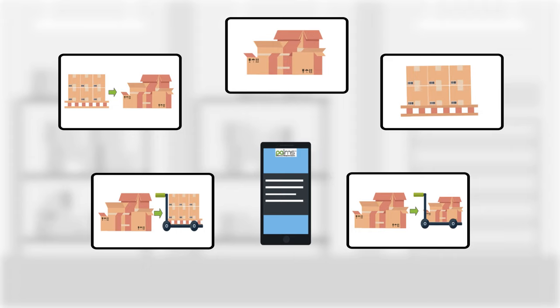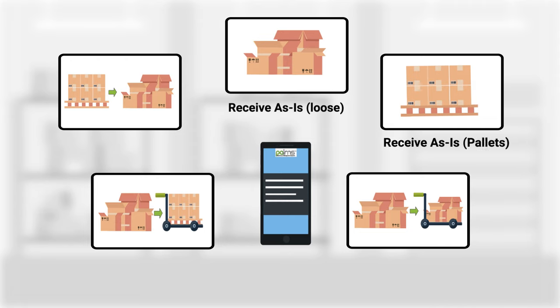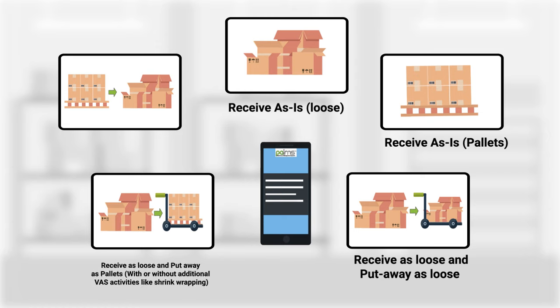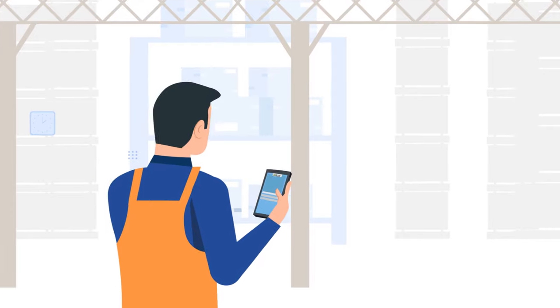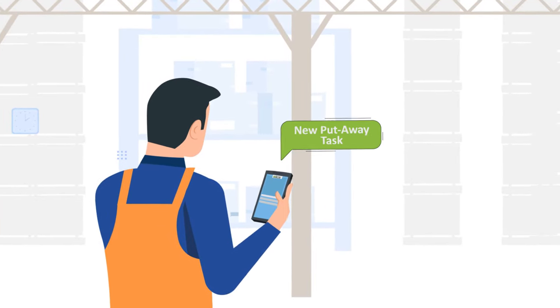Receiving can be classified into the following modes: receive as-is loose, receive as-is pallets, receive as loose and put away as loose, receive as loose and put away as pallets with or without additional VAS activities like shrink wrapping, and receive as pallets and put away as loose. Post receiving, a put-away task is generated automatically and a notification is displayed to the put-away team.